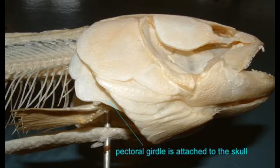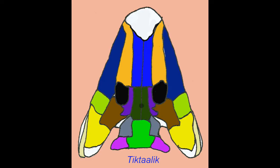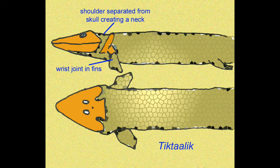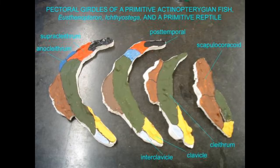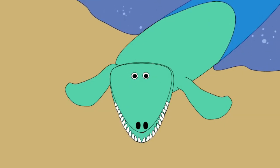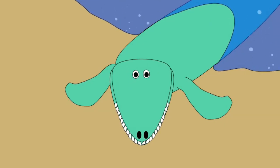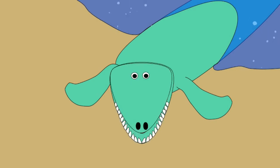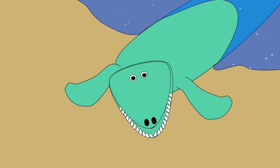Later, Sarcopterygian fish, like Tiktaalik, would actually separate the pectoral girdle from the skull by the degradation of the bones which attach the two, creating the neck like that observed in early amphibians.